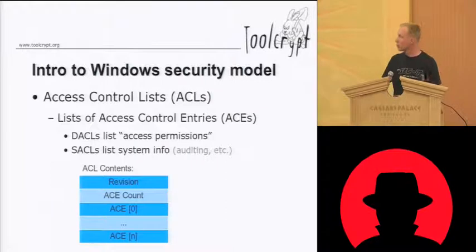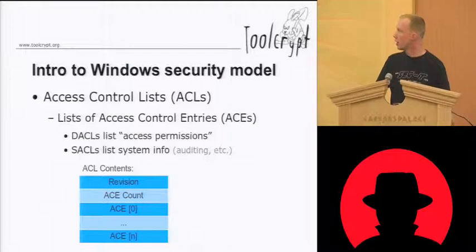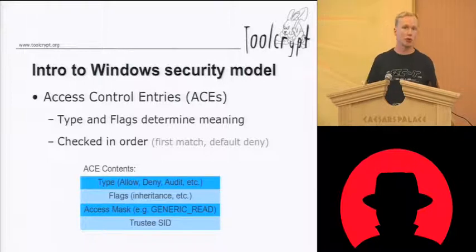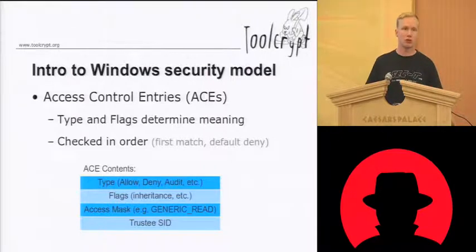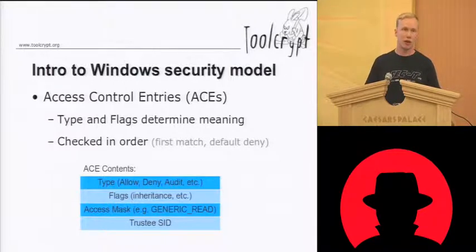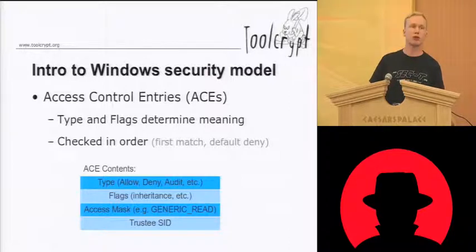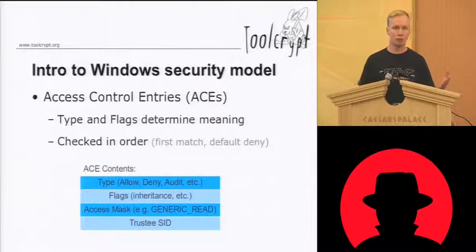Access control lists are basically built up of a list of access control entries. And access control entries are of a certain type. So you have one type, for example, controlling auditing of access to system resources, and that's only used in the system access control list or the SACL. I'll keep referring to these as DACL and SACL, so it's much easier to say. We have some flags in each access control entry controlling, for example, inheritance — in a file system, you can set a DACL on a directory that will propagate through to subdirectories and things like that.